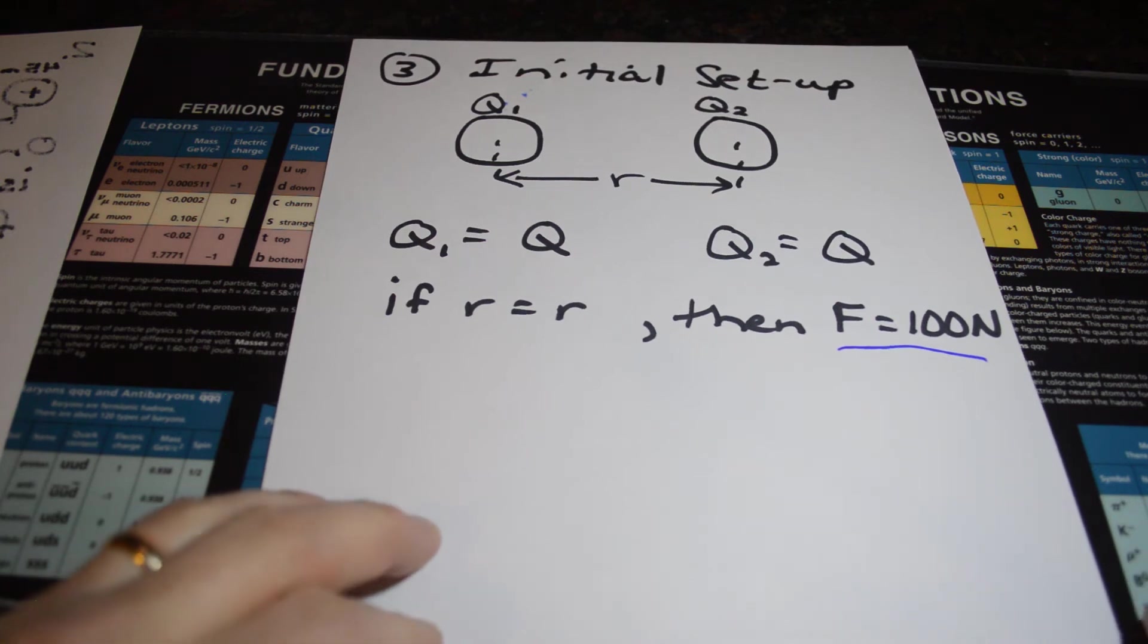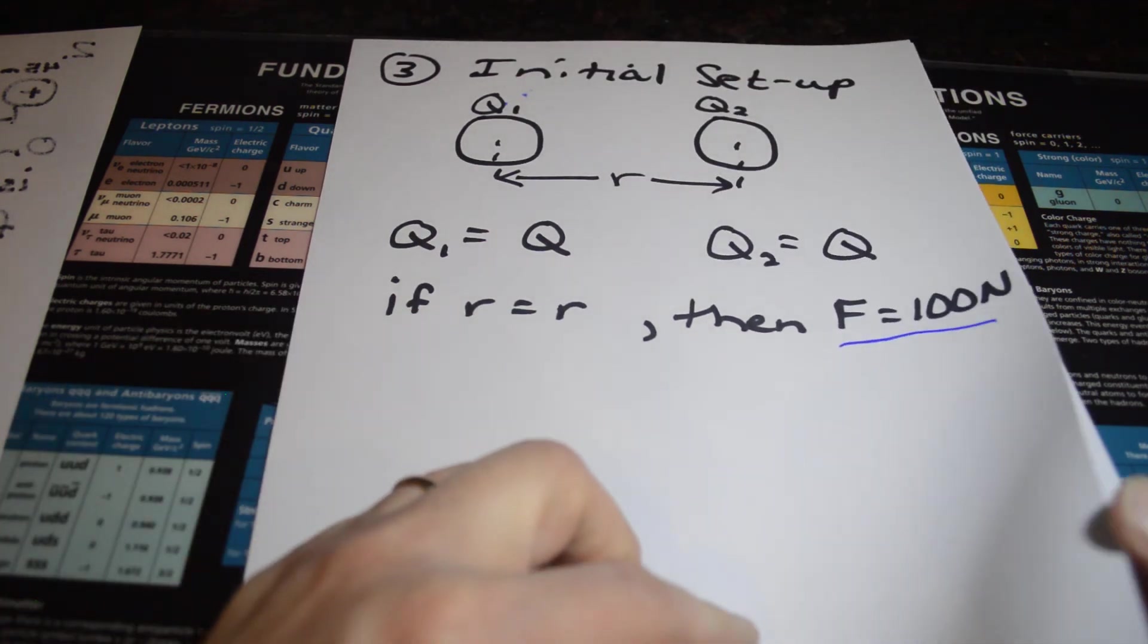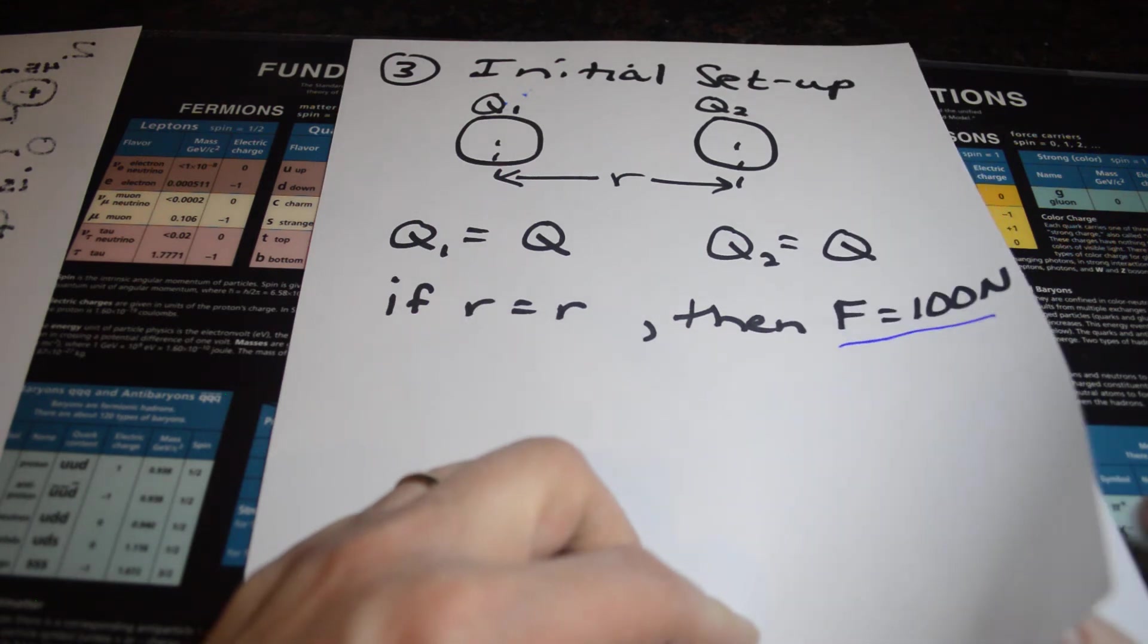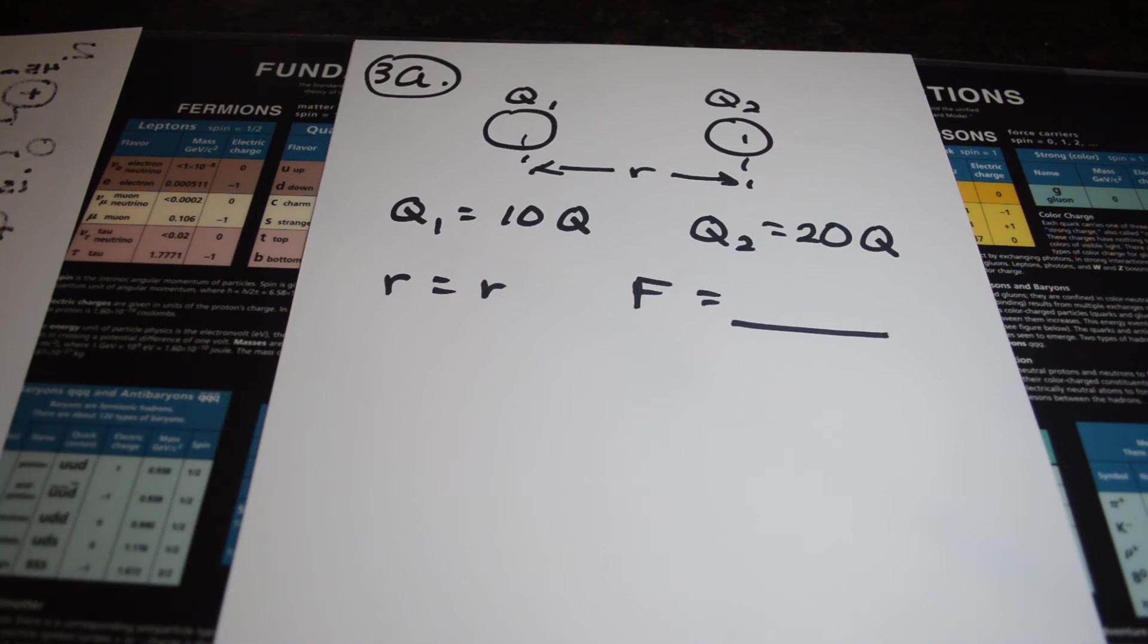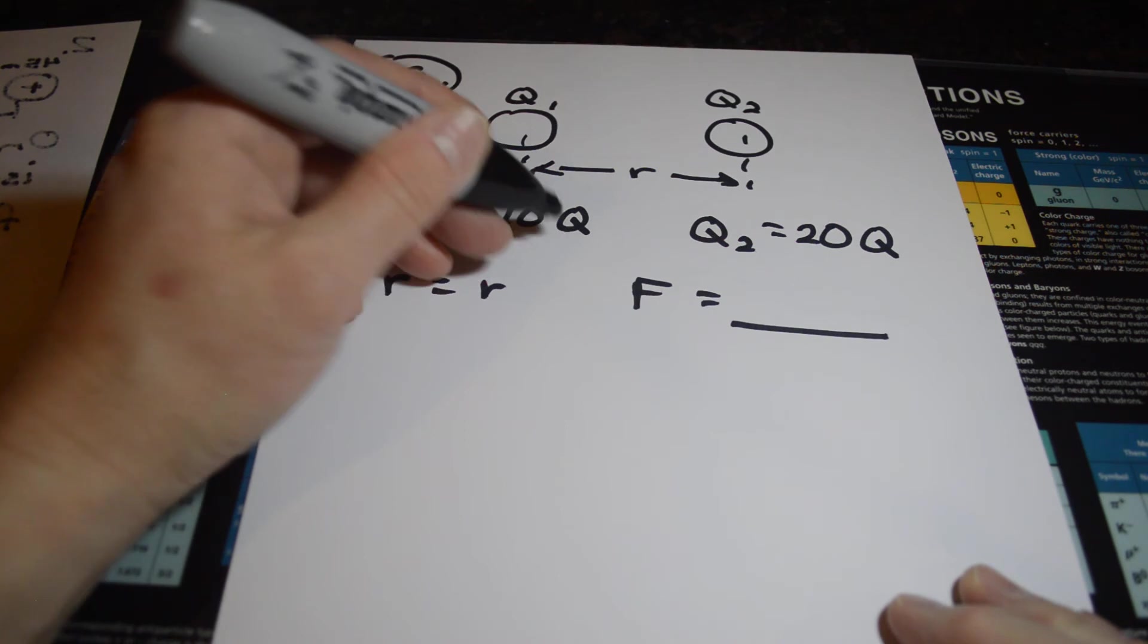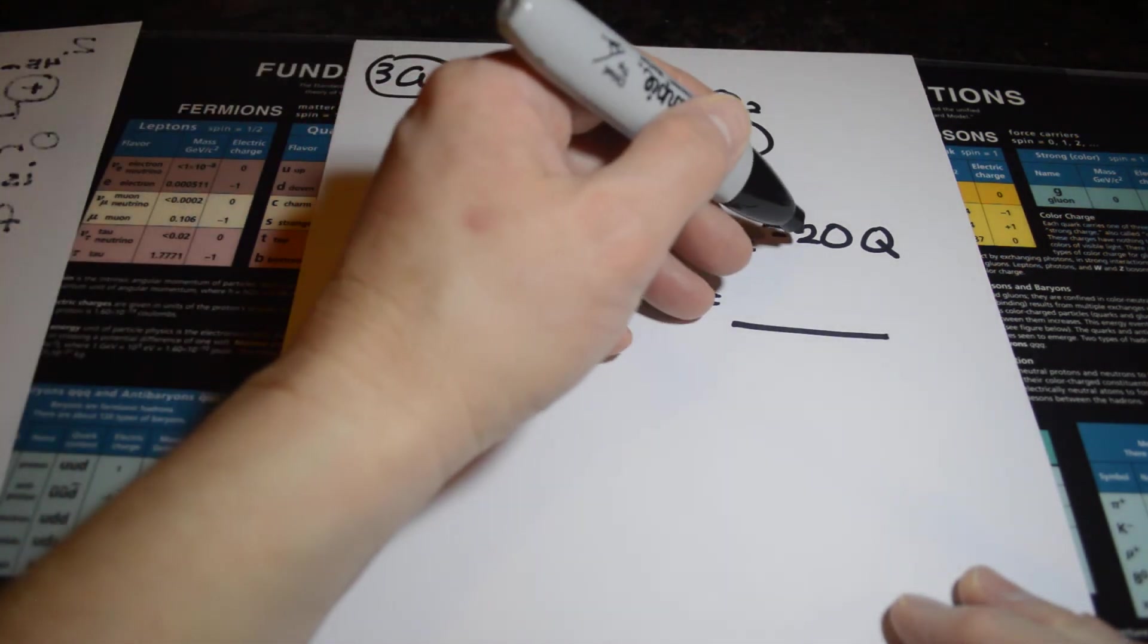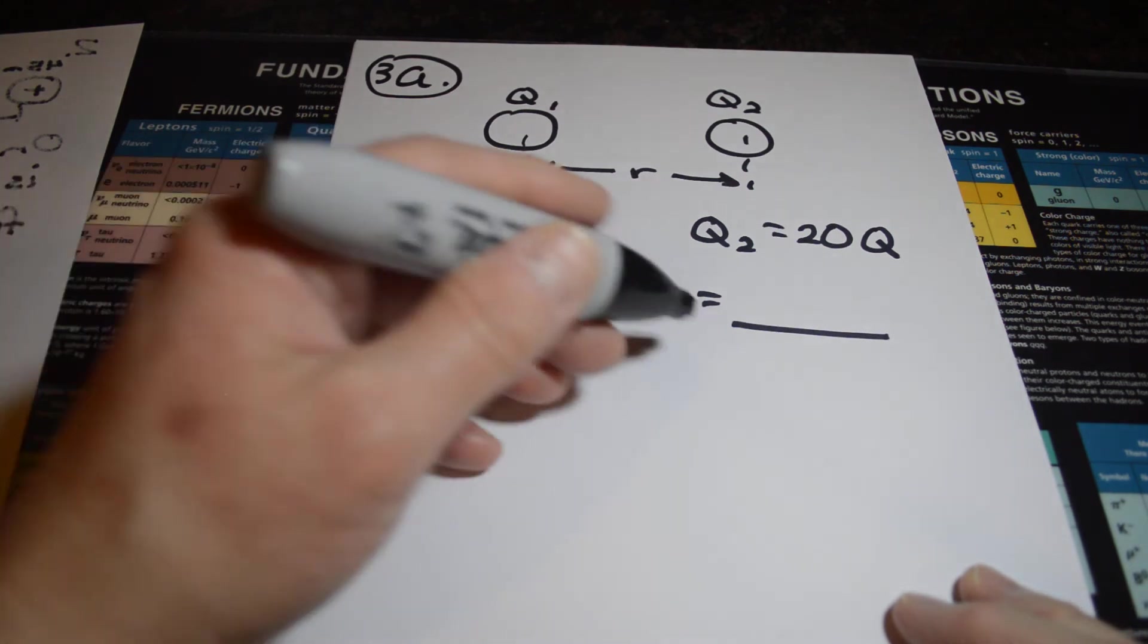Now all the different setups from here are related to this. So we may, in fact, have to bring this initial setup back for a second. But if that's the case, and you had Q and Q, there were a distance R apart, and there was a force of 100, let's see what happens if you change this up. Let's say Q1 is now 10Q, and Q2 is 20 times Q, and they're still the same distance R apart. What's the force?